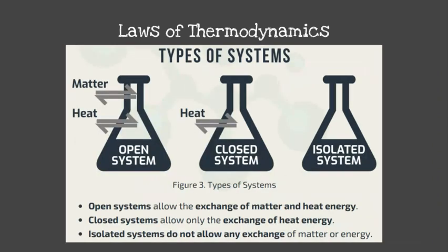There are types of systems. The first is the open system, where matter and heat can be exchanged. An example of this is a glass of water, where air can go inside the glass of water and the water can go outside freely, and heat can also be exchanged through the glass.